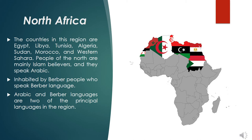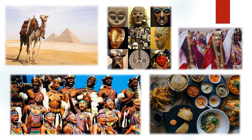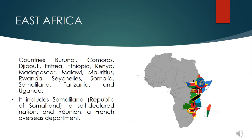East Africa is composed of the countries Burundi, Comoros, Djibouti, Eritrea, Ethiopia, Kenya, Madagascar, Malawi, Mauritius, Rwanda, Seychelles, Somalia, Somaliland, Tanzania, and Uganda. It also includes Somaliland — the Republic of Somaliland, a self-declared nation — and Reunion, a French Overseas Department.